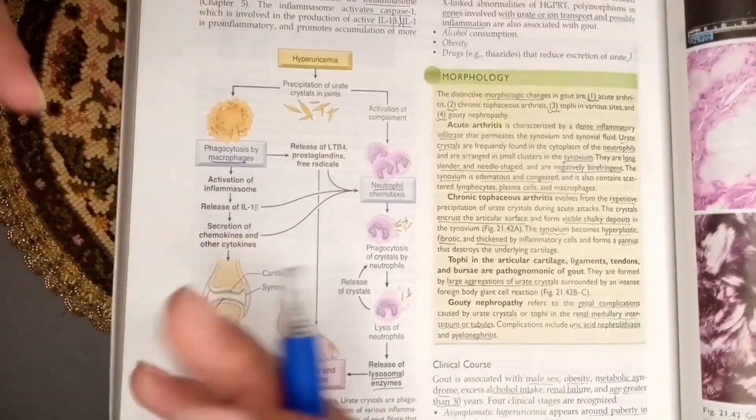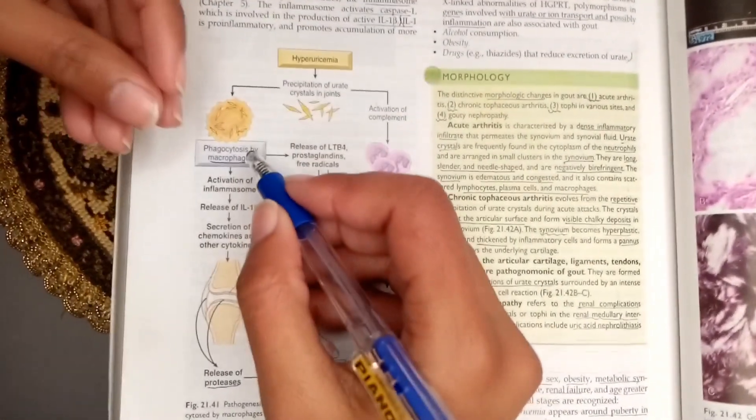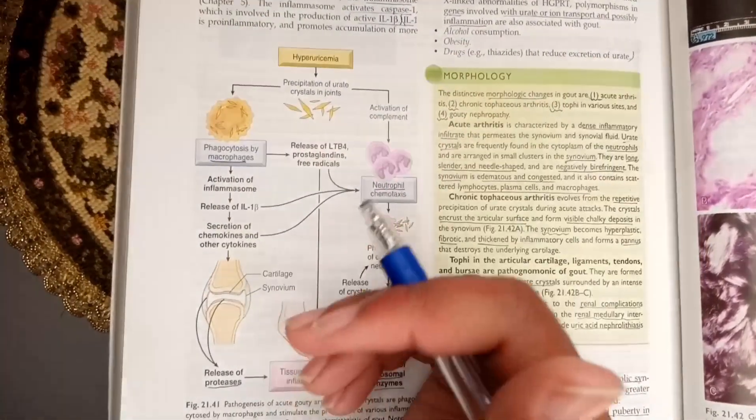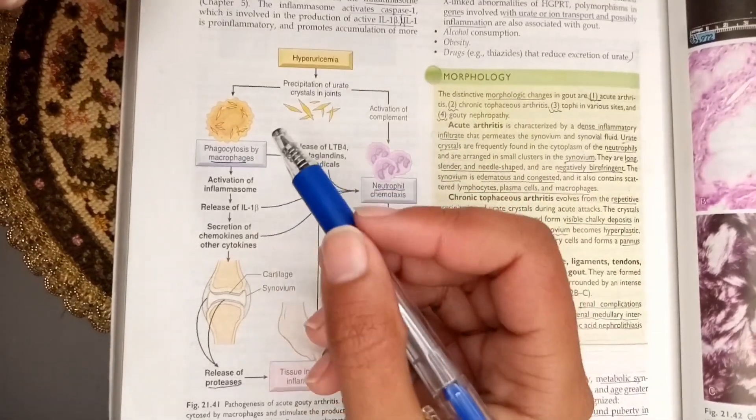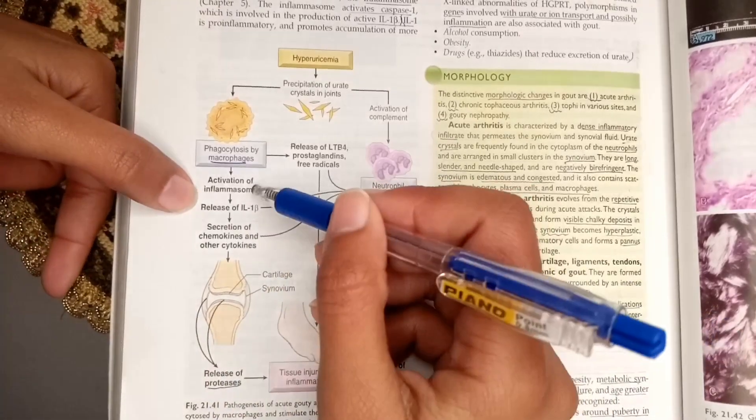When the macrophages phagocytose the crystals, cytosolic sensors within the macrophages are activated. These cytosolic sensors are known as inflammasomes, so the activation of inflammasomes occurs.